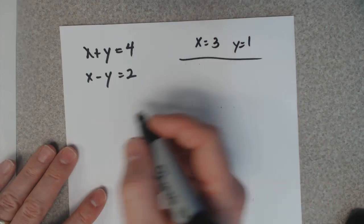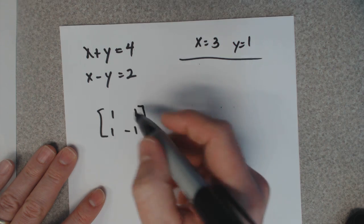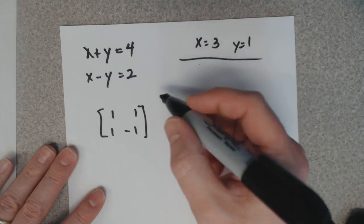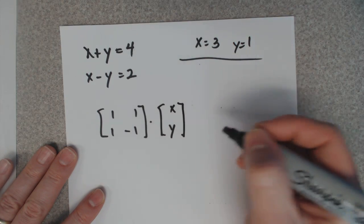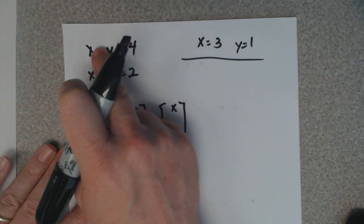You've got a coefficient matrix of your coefficients: one, one, one, negative one. You write a matrix of your variables. Now if you take this matrix times this one, you will get this part of the system.